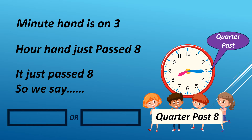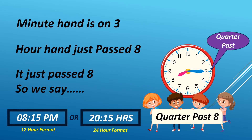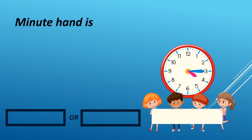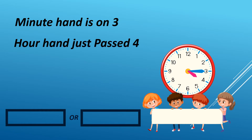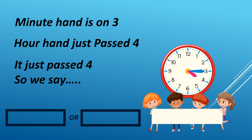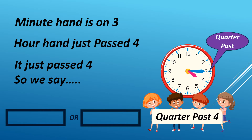It can either be AM or PM. For example, it is 8:15 PM in 12-hour format. We read it as 2015 hours in 24-hour format. When the minute hand is on 3 and the hour hand just passed 4, we say quarter past 4. It can either be AM or PM. For example, it is 4:15 AM in 12-hour format.